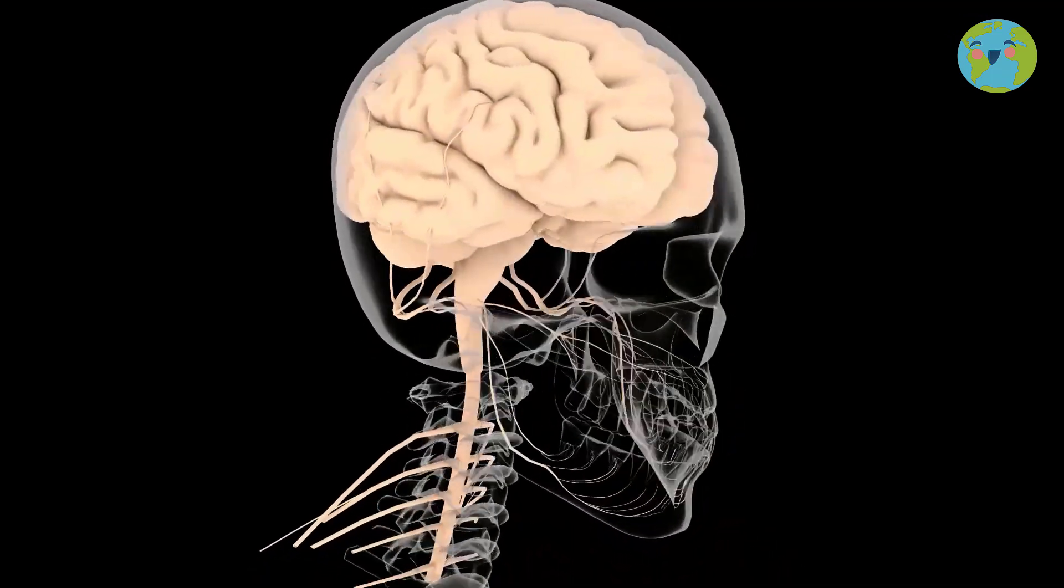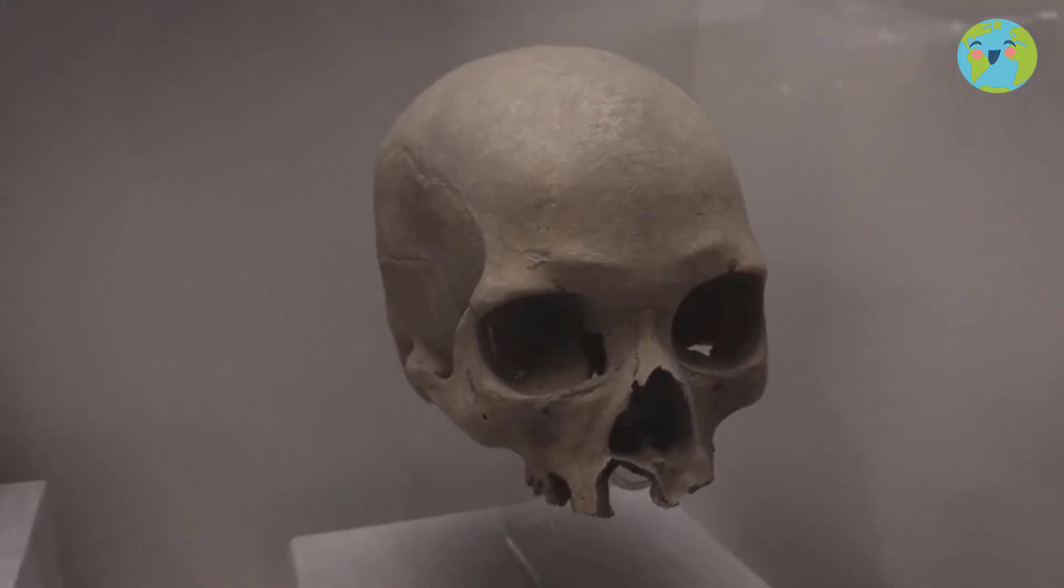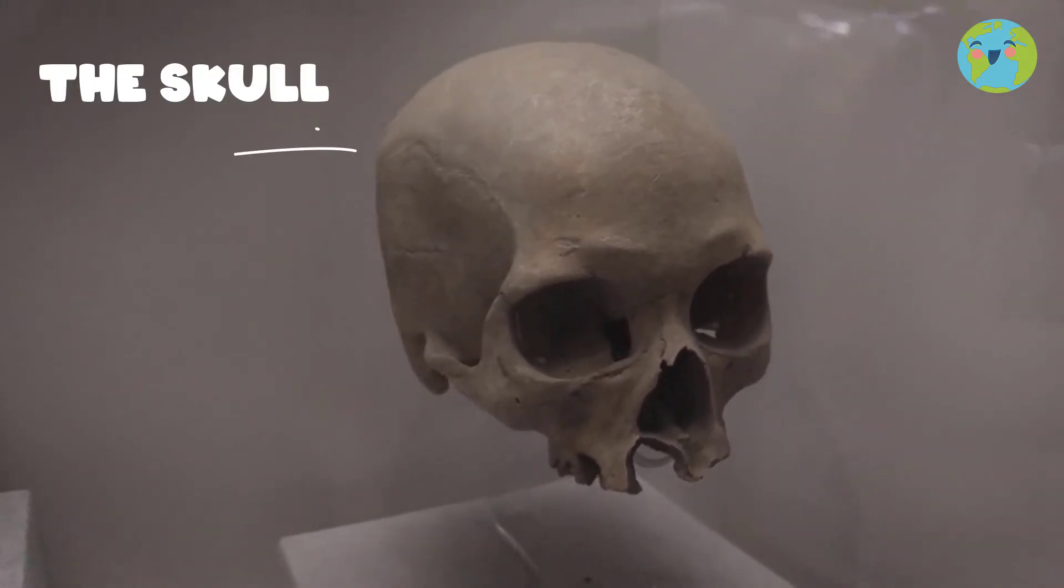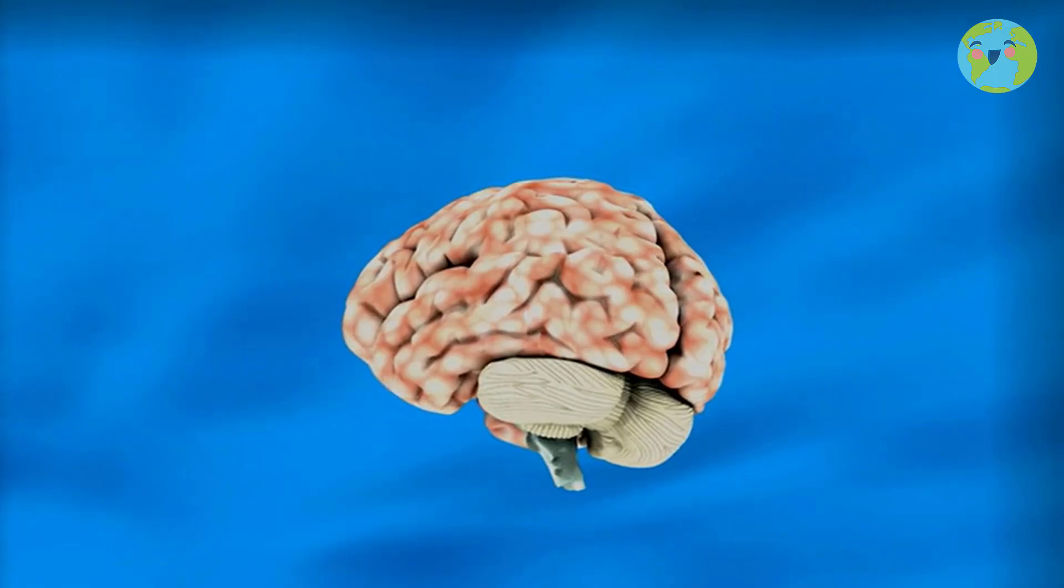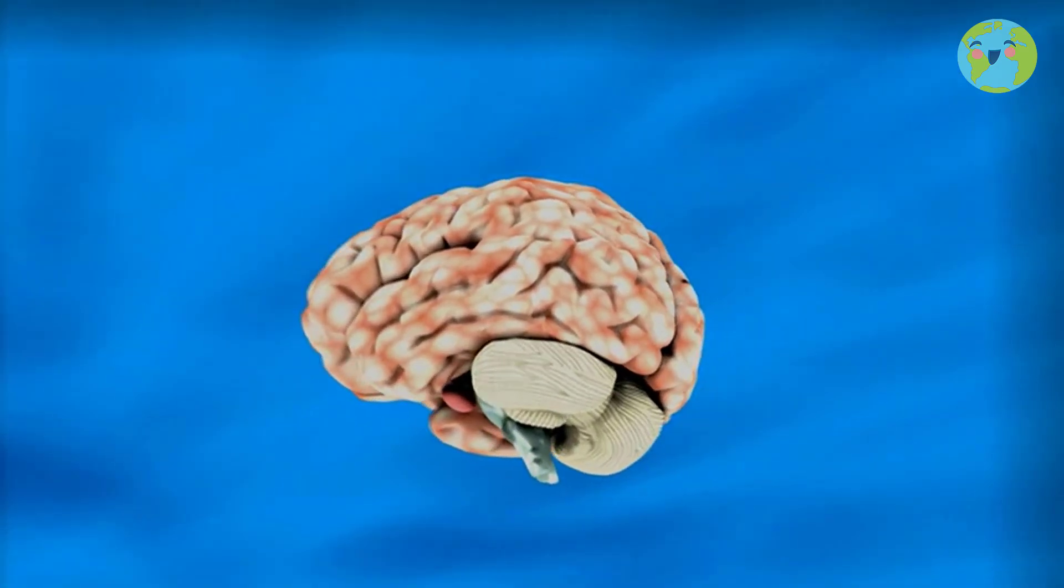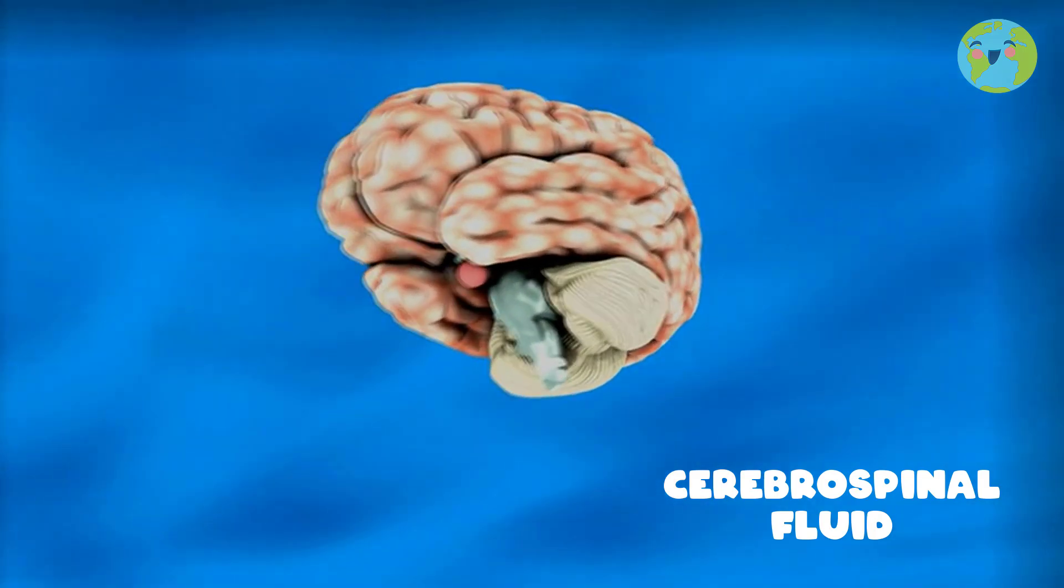Our brain, guys, is located inside our head. More specifically, within a set of bones that protect it called the skull. And it is also floating in a transparent liquid called cerebrospinal fluid, which also protects it.